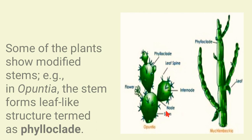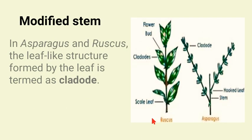Some xerophytes show a modified stem. In Opuntia, the stem is modified into a leaf-like structure known as phylloclades, and leaves are reduced into spines. These stem-like structures — phylloclades — basically store water.